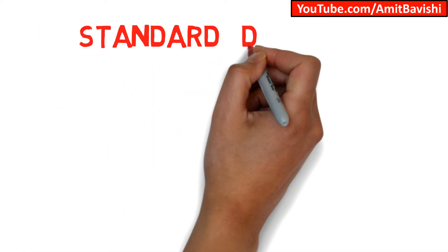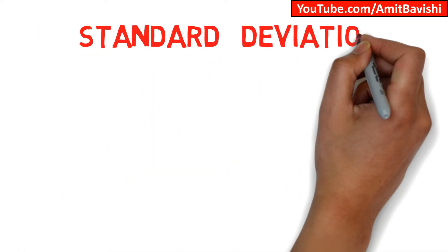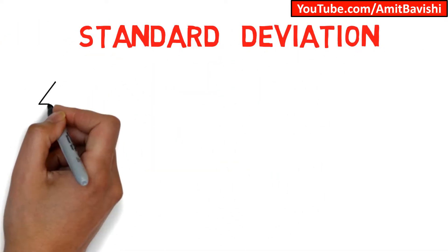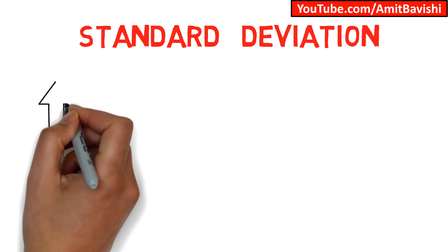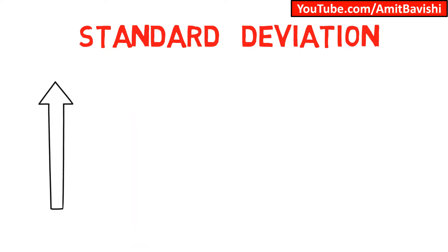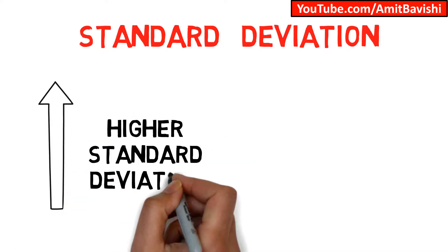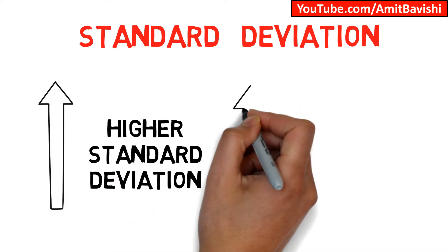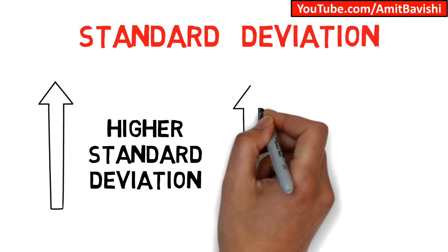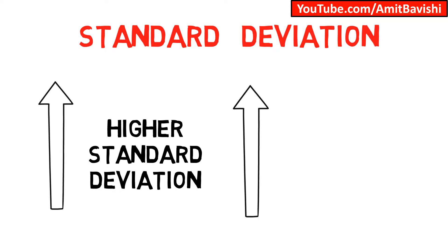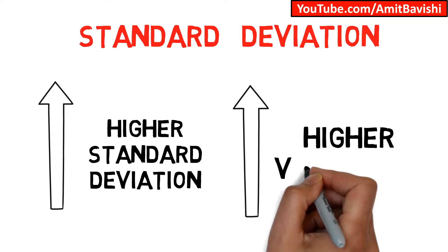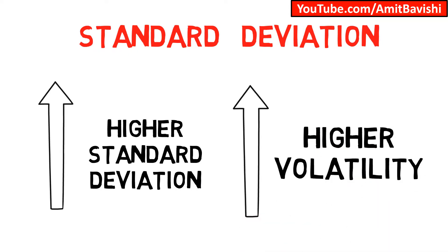Standard Deviation. Standard deviation is a statistical measure of the range of an investment's performance. When a Mutual Fund has a high standard deviation, it means its range of performance is wide, implying greater volatility.